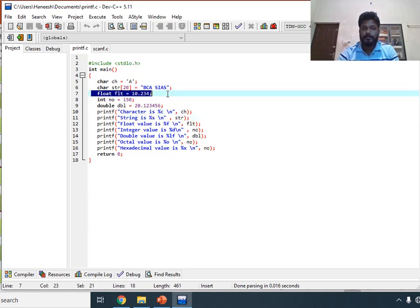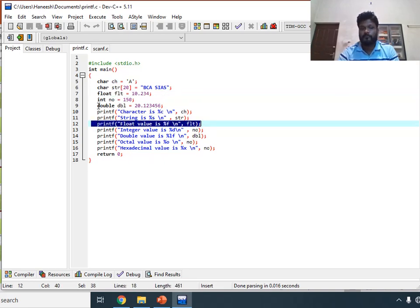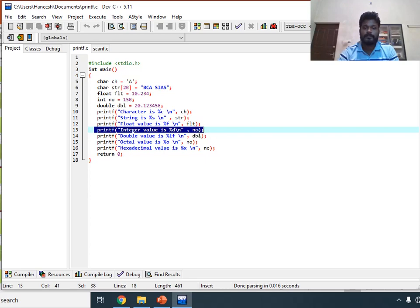Then float value is %f for displaying float values. Then integer number 150 - that is printf integer value is %d for integer, that is number.